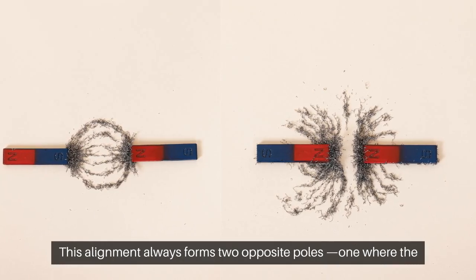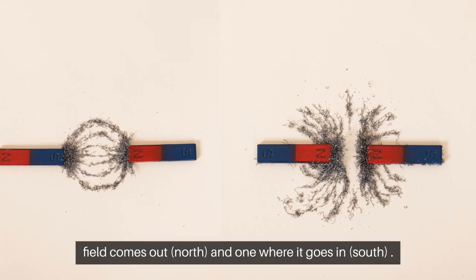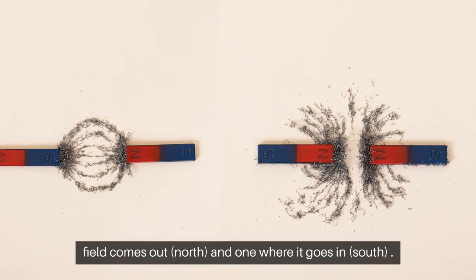This alignment always forms two opposite poles, one where the field comes out, north, and one where it goes in, south.